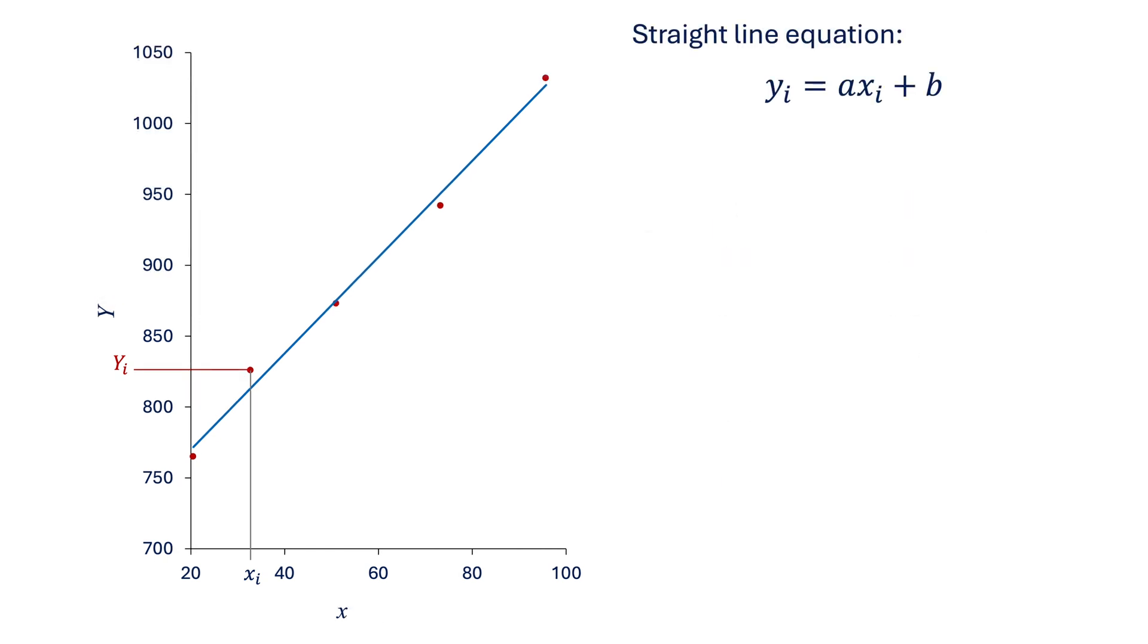This is the equation of a linear function with two unknowns: a, the slope of the line, and b, the y-intercept. Or in other words, the value of yi when xi is equal to zero.